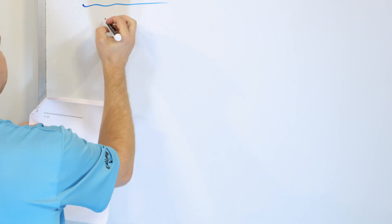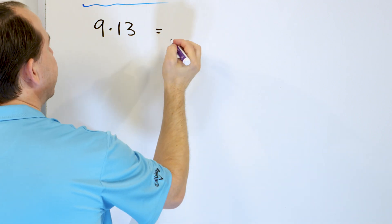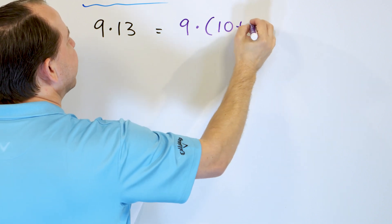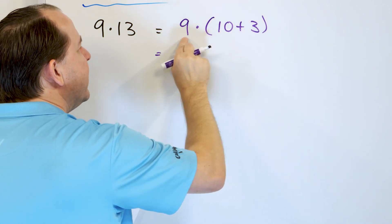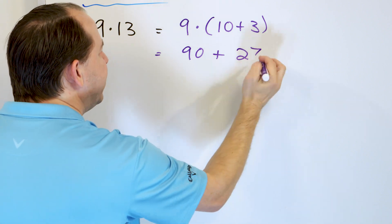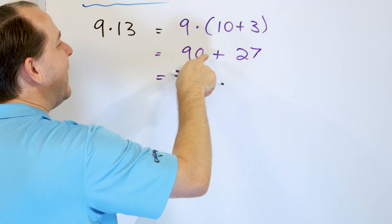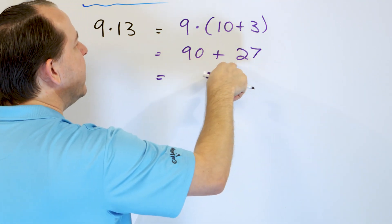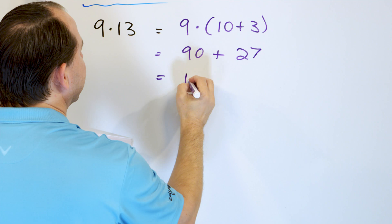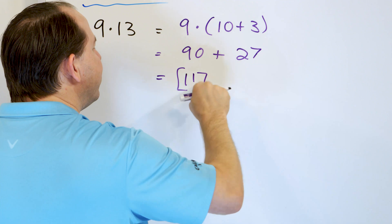Next problem: 9 times 13. So rapidly, how would we do it? This 1 is not really worth a 1 — it's really 10. So really, this is 10 plus 3. When we multiply 9 times 10, we get 90. And then 9 times 3 is 27. So we do have to hold these numbers and add them. The easier way is to start at 90 and count up by 10s: 100, 110, then 117, because we added 20 and then added 7. We get an answer of 117.